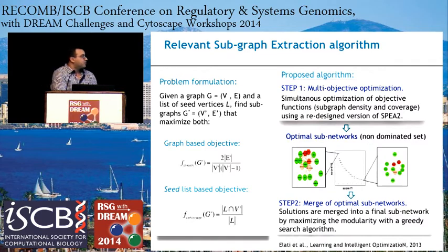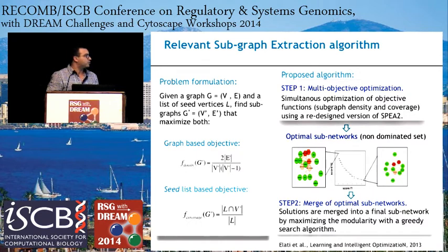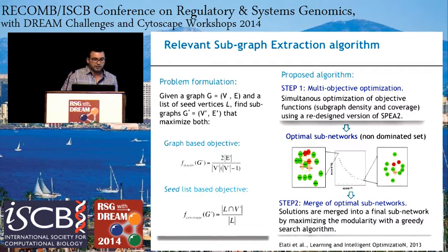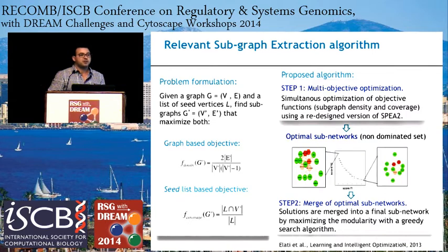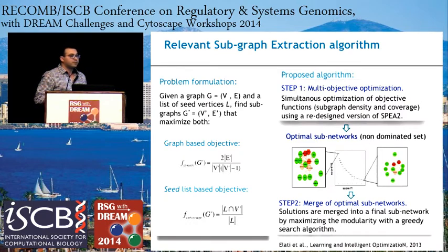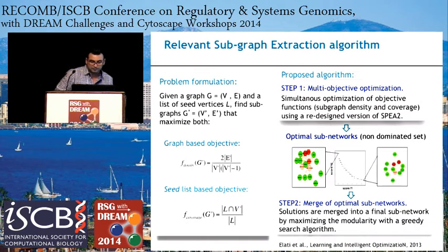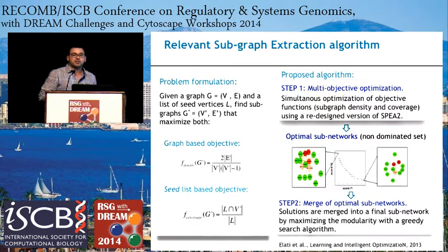We solve this multi-objective optimization problem using a redesigned version of the Strength Pareto Evolutionary Algorithm, SPEA-2. This popular approach was modified to handle networks instead of real values. The output is a non-dominated set of subnetworks that are merged into a final subnetwork in a second step by maximizing modularity with a greedy search algorithm. This step removes highly connected hub proteins that are not specific to the complex.